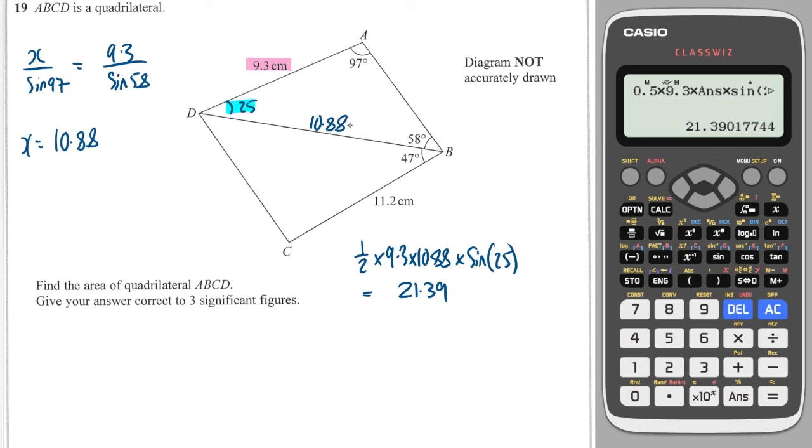And then let's look at the other triangle. Well we've got two sides and we have an angle in between them. So we can do the same thing and we can work out the area of that triangle. So that one is 11.2 times 10.88 times by sine of 47. So we do 0.5 times 11.2 times by 10.88 times by sine of 47. And this gives us 44.56.